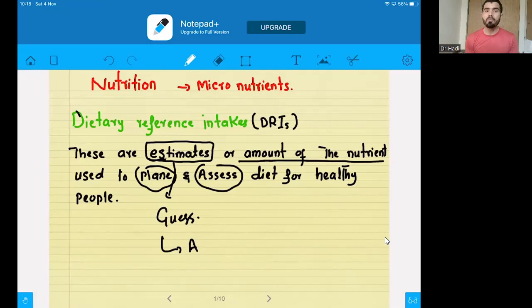Why these are important? DRIs will ensure to make a diet, a good diet plan for healthy people. If someone wants to be healthy, you need a plan. You get this plan from dietary reference intake.